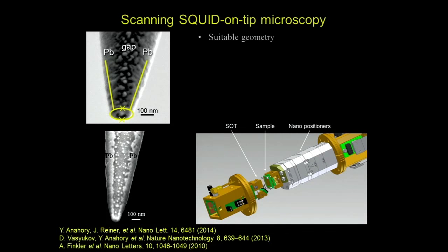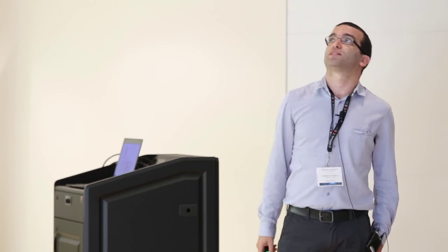The idea is to mount one of these pipettes in a scanning probe microscope to do scanning SQUID microscopy. It has a suitable geometry because it's small and you can get it close to the sample. As a result it is very sensitive — we get about one-third of a Bohr magneton sensitivity, or a flux noise of about 50 nano-phi-naught, which is really good for SQUIDs. We also get a spatial resolution of tens of nanometers, much better than the micron-sized SQUIDs typically achieved, and we can work in fields up to about two tesla.